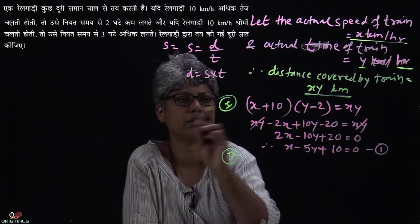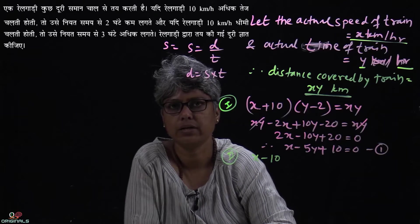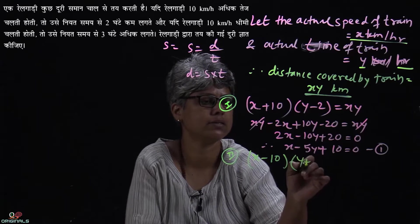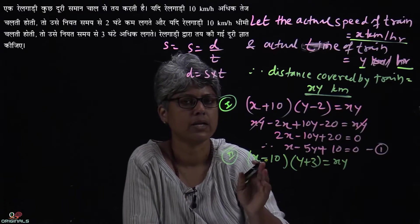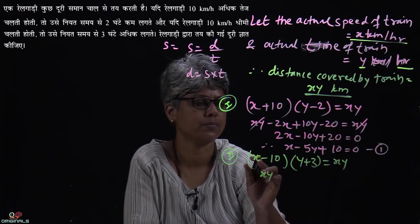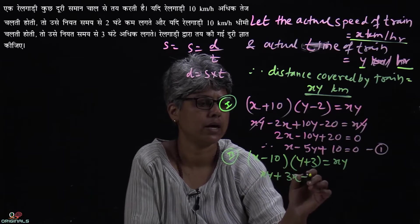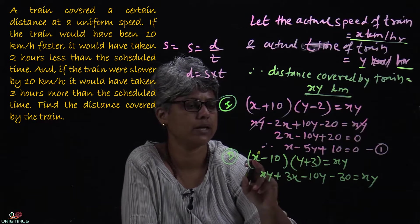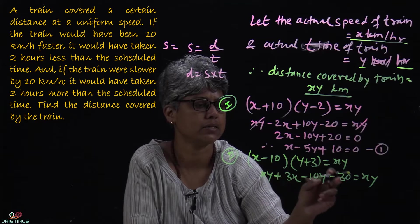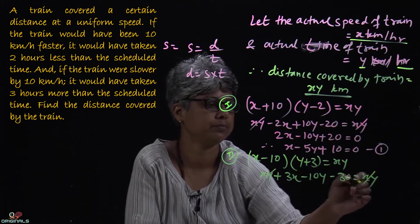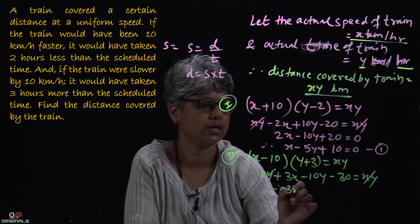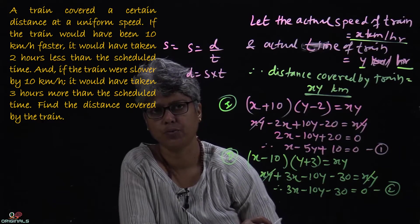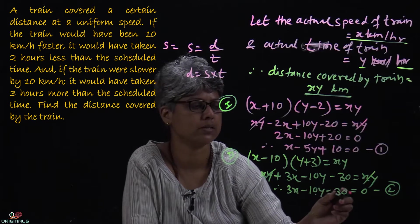Second case: if the train were slowed by 10 km per hour, speed becomes x minus 10. It would have taken 3 hours more, so time becomes y plus 3. Distance remains the same equal to xy. Expanding: xy plus 3x minus 10y minus 30 equal to xy. The xy terms cancel giving Equation 2: 3x minus 10y minus 30 equal to 0.